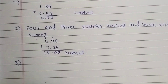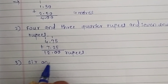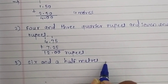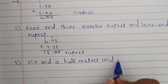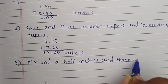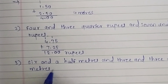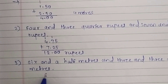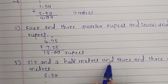Now the third question. We have six and a half meters and three and three quarter meters. Six and a half meters is written as 6.50, since half means 0.50.